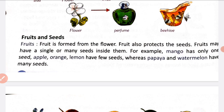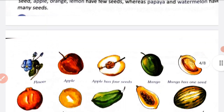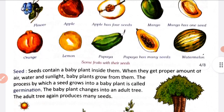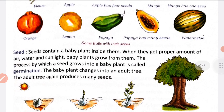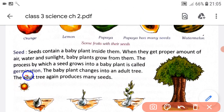Papaya and watermelon have many seeds. Now, seeds grow new plants. When a new plant grows from a seed, this process is called germination. It is called germination.